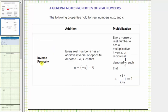Finally, we have the inverse property of addition and the inverse property of multiplication. The inverse property of addition states every non-zero real number a has an additive inverse or opposite, denoted negative a, such that a plus negative a equals zero. The inverse property of multiplication states every non-zero real number a has a multiplicative inverse or reciprocal, denoted one over a, such that a times one over a equals one.